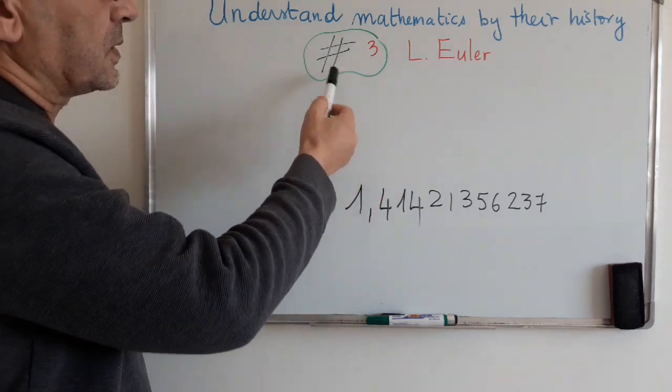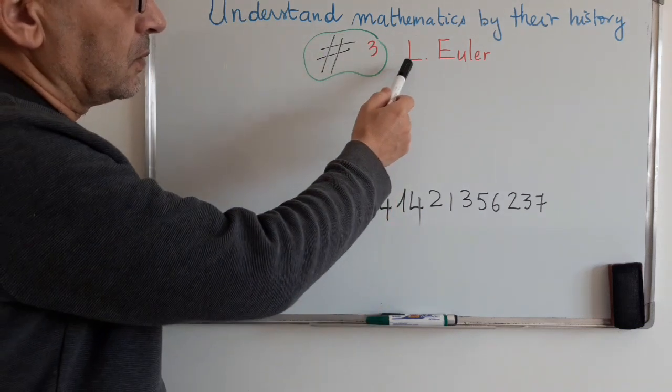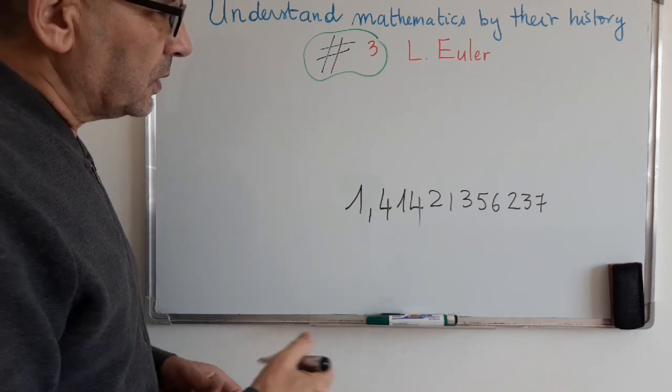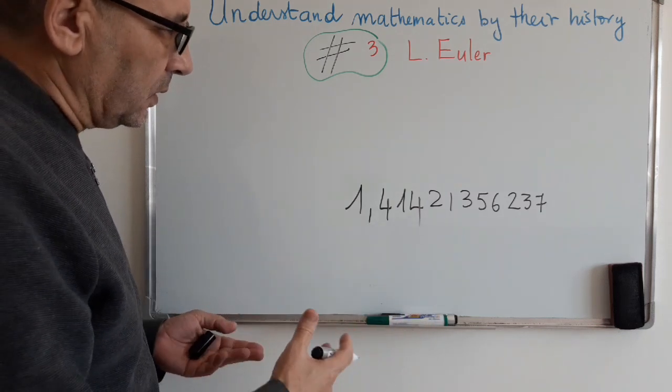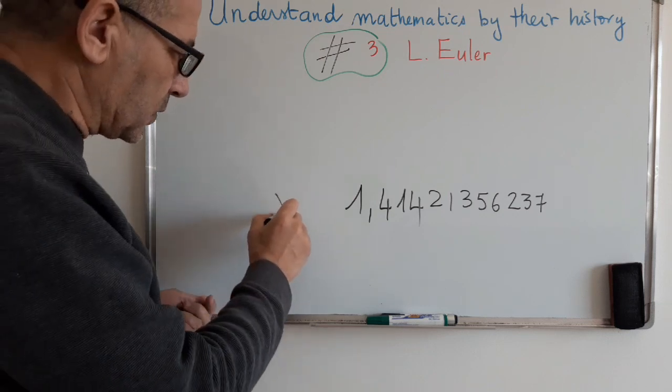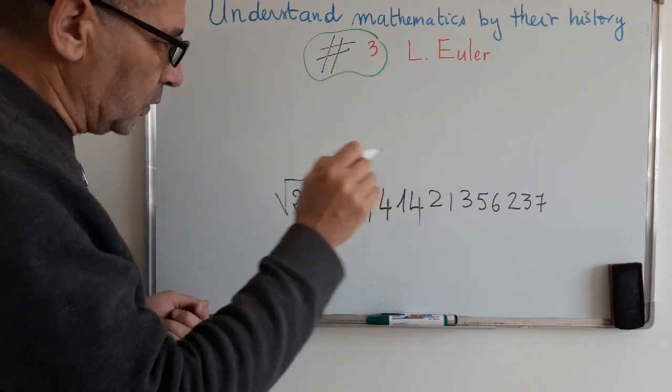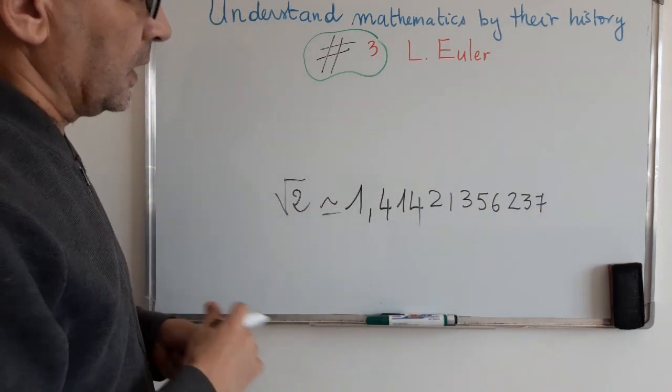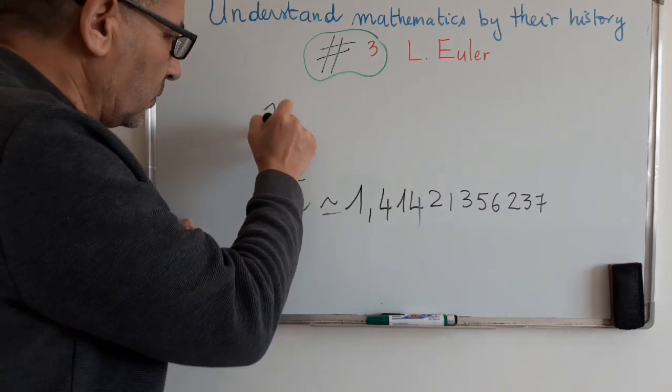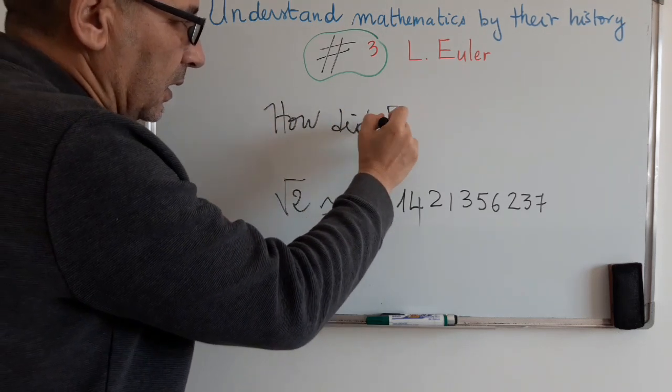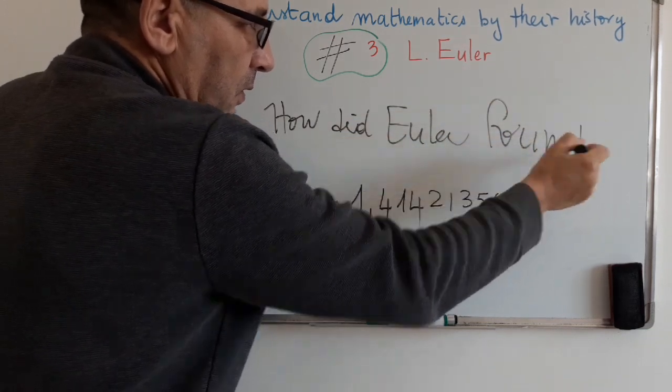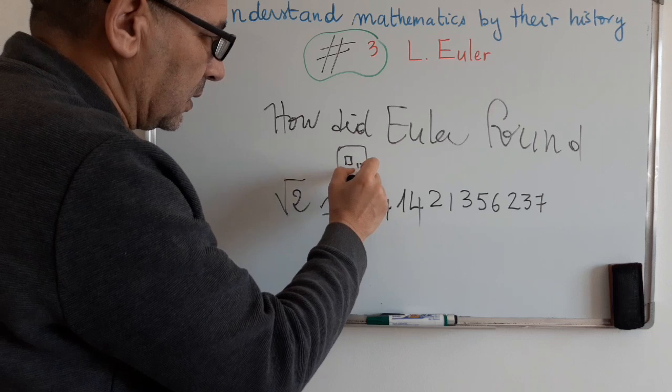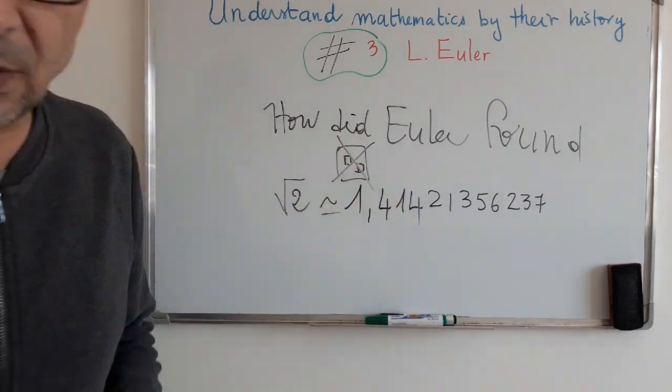Welcome everybody to this third sequence about the mathematician Leonard Euler. If one uses a powerful calculator to find an approximate value of square root of 2, surely you will find an expression of this kind. The subject of this talk is how did Euler find a similar better approximation of square root of 2 without calculators? This is the subject of the talk.